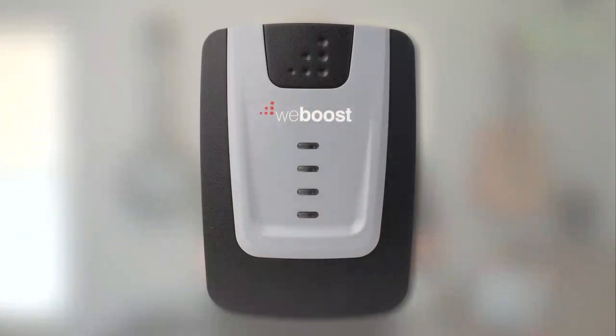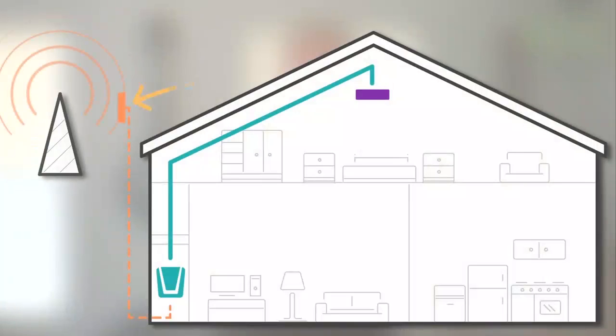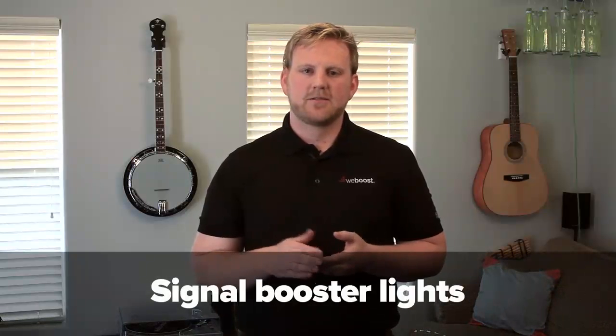So how do you know your booster is in oscillation or feedback? If you look at the booster and the lights are red, that will indicate that you need a little bit more separation between the internal and external antennas. If you want to learn more about the lights, click here.